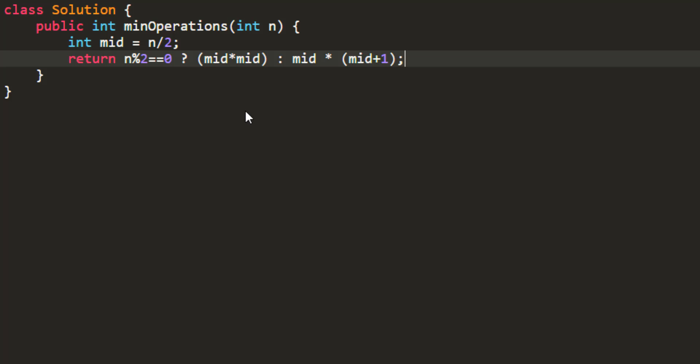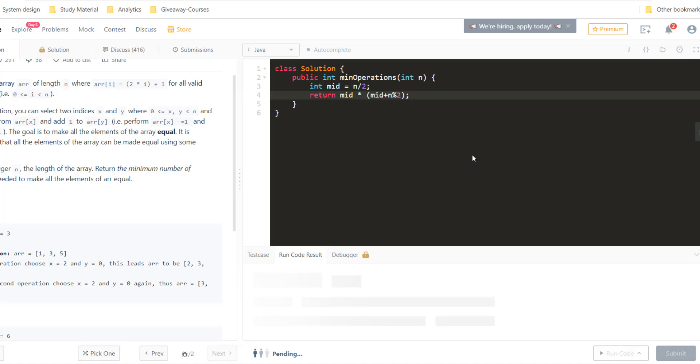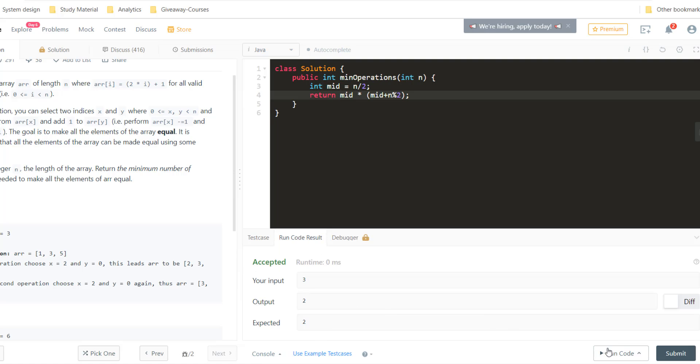Now, this condition can even shorten further by just using this n mod 2 in place of 1 and we can remove this condition from here. Let's run this code and it's giving a perfect result. Let's submit this and it got submitted.